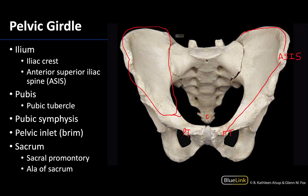While we're in the area of the pubic bone, let's talk about the one joint we are discussing in this section, which is the pubic symphysis, right here. It's a cartilaginous joint between the bodies of the pubic bones in the midline. This is an important area as a joint, but it's also a general area for muscle attachment, and portions of the external genitalia also attach in this general region.